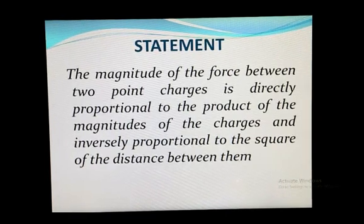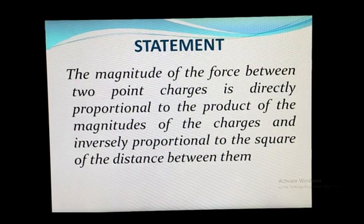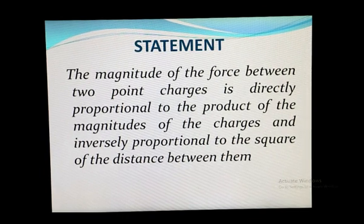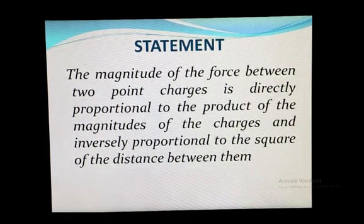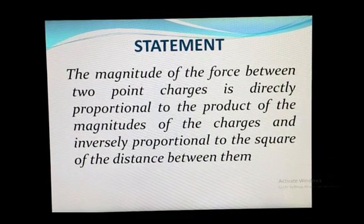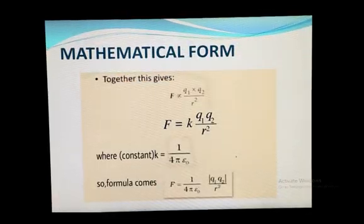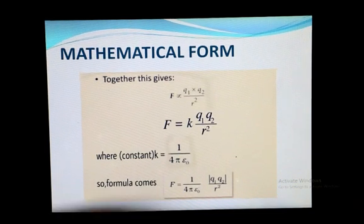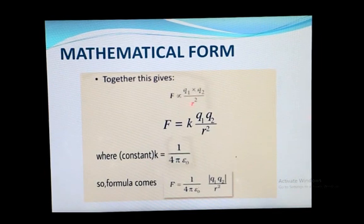Now we come to the statement of Coulomb's law: the magnitude of the force between two point charges is directly proportional to the product of the magnitude of the charges and inversely proportional to the square of the distance between them. This gives the theoretical statement of Coulomb's law. The mathematical form comes from this statement: F is directly proportional to Q1 times Q2 over R square.